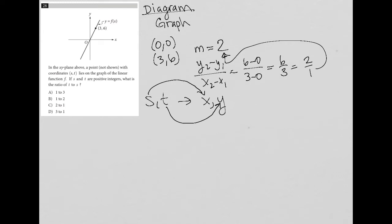So if s and t are positive integers in the first quadrant, what is the ratio of t to s? So t over s. On this test, we're going to think of ratio as fraction. Always think of it as a fraction.